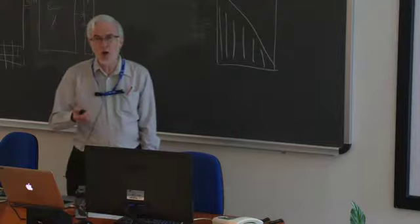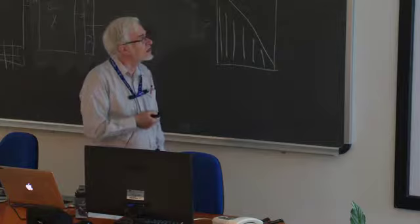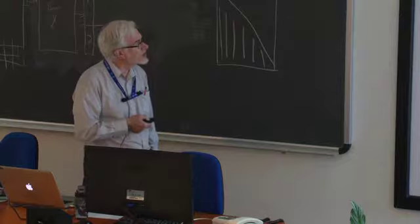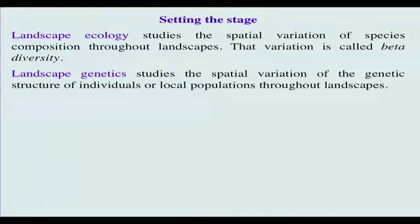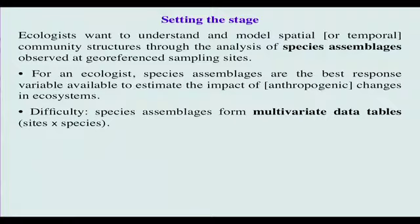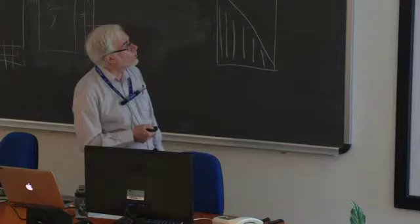The study of spatial structures is well considered, and it is included in the name of two branches: landscape ecology and landscape genetics, where we study the spatial variation of species composition or genetic structures of individuals or local populations throughout the landscape. That variation is called beta diversity, and in genetics it can also be called genetic beta diversity.